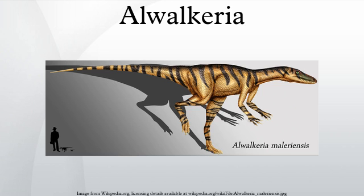This arrangement of teeth is neither clearly herbivorous nor clearly carnivorous, which suggests that this dinosaur was an omnivore with a varied diet, including insects, small vertebrates, and plant material.